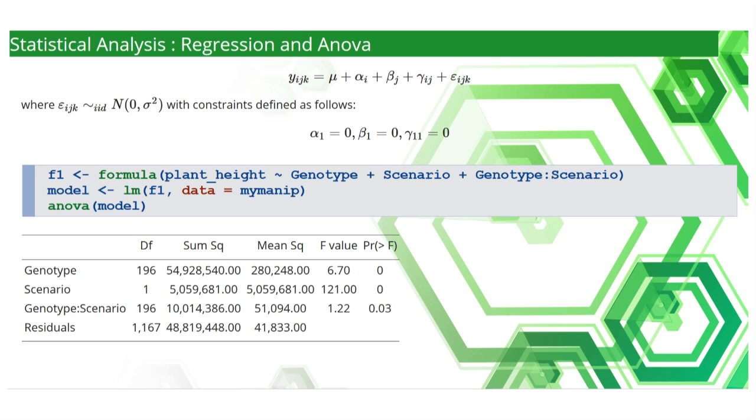My command on R. The command formula enables us to define the linear model and then it is stored under the name F1. The command LM does the linear regression, estimation of the parameters with the specified data frame, here mymanip, and then the results are stored under the name model. The command ANOVA computes and prints the table of analysis of variance.